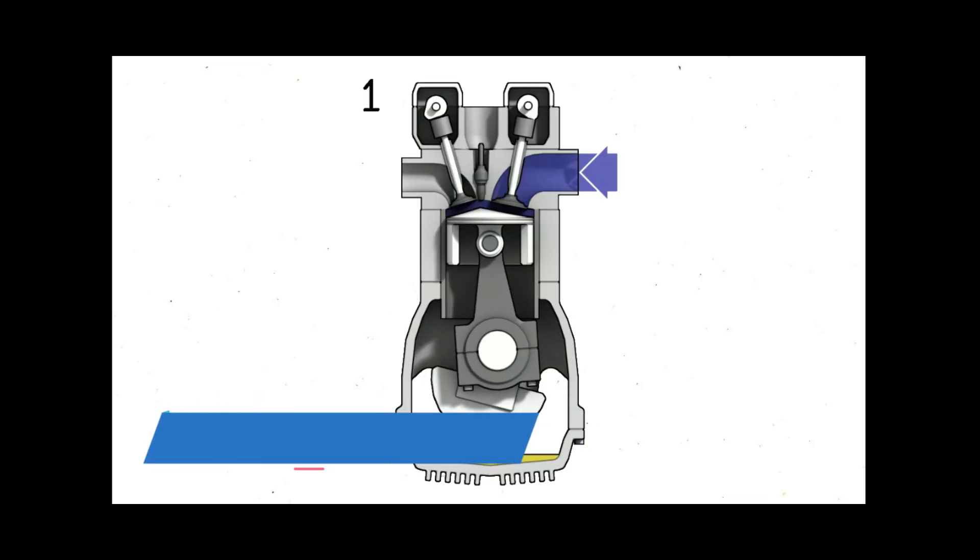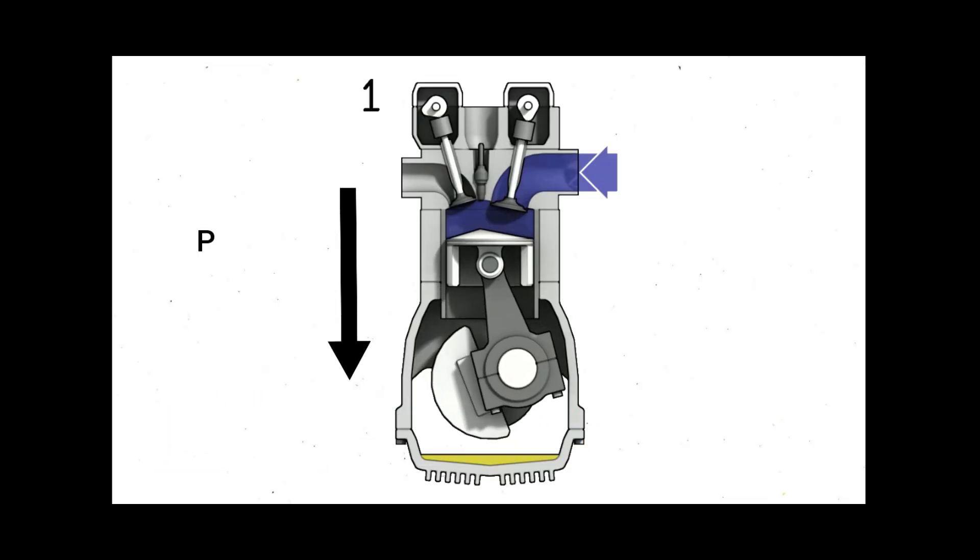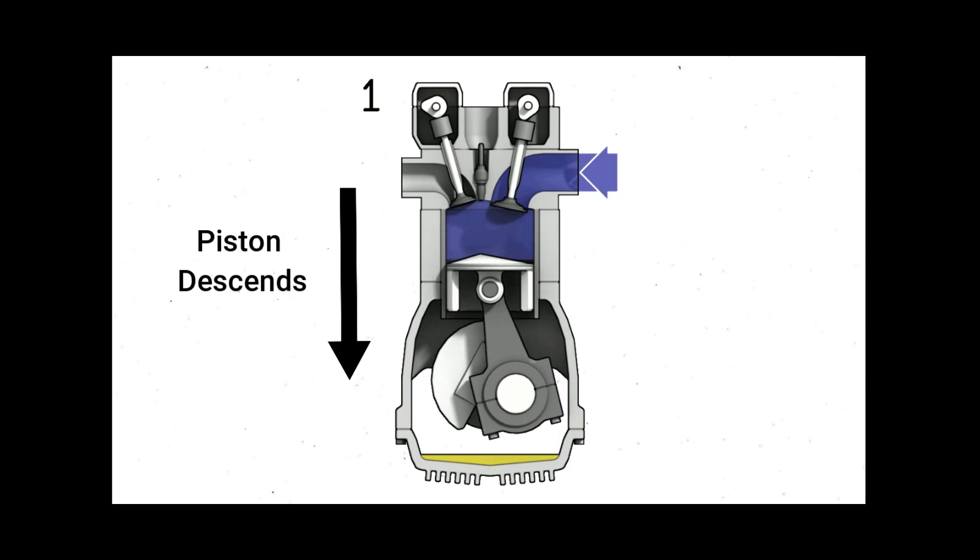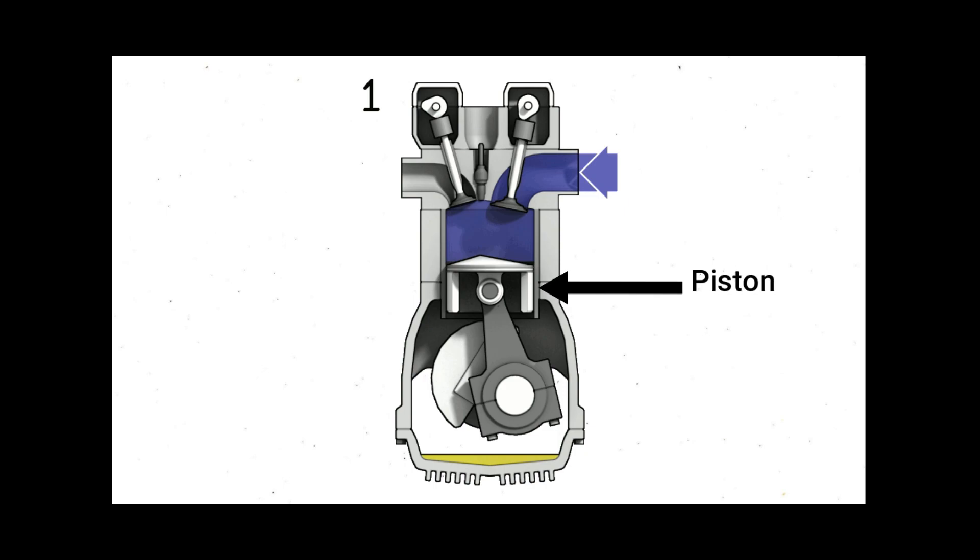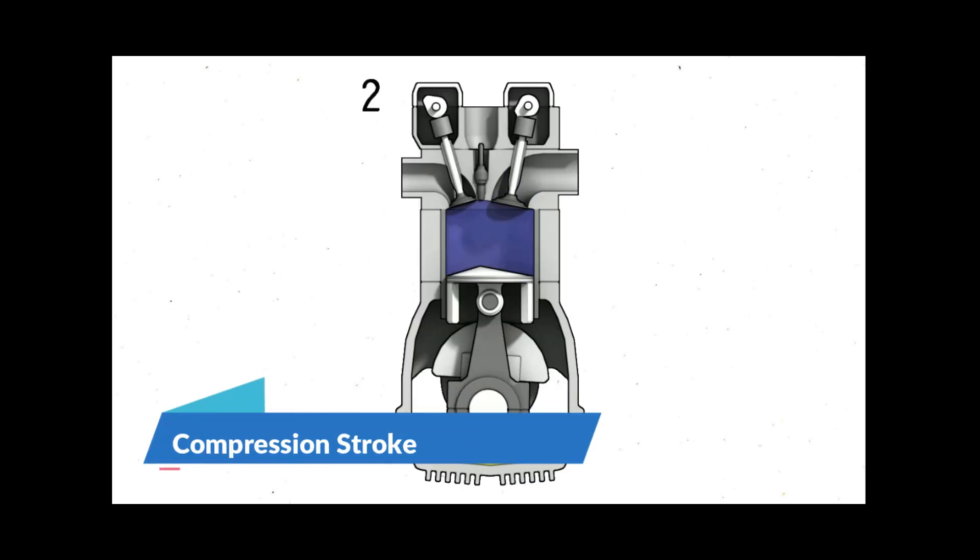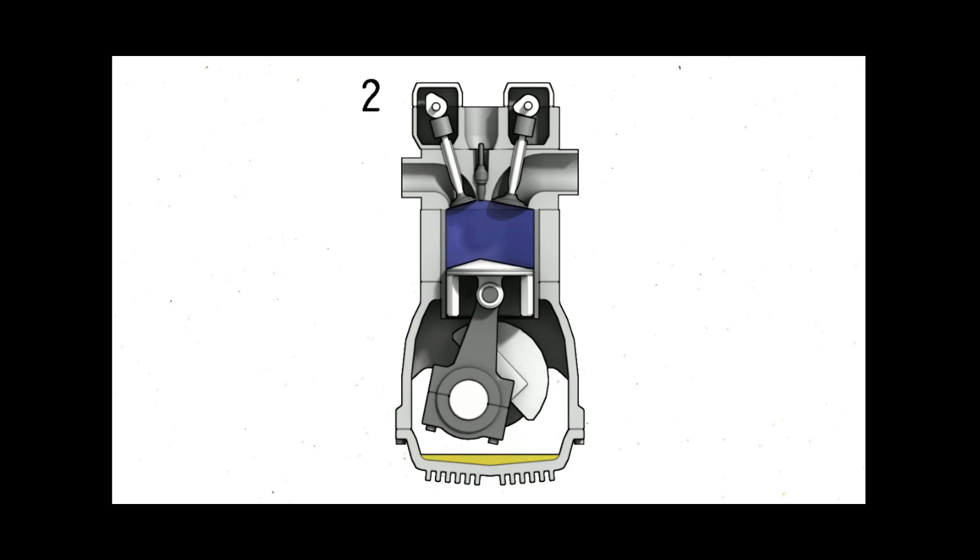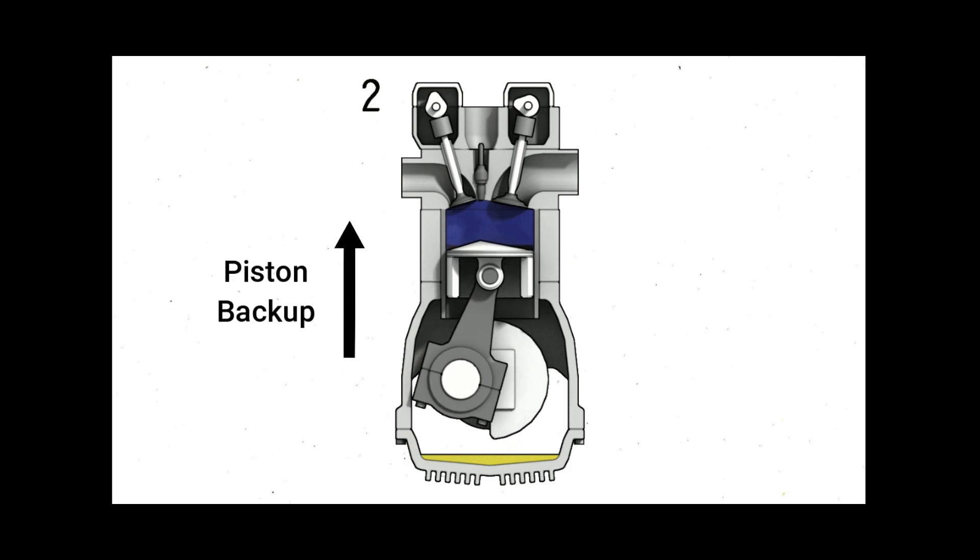In the intake stroke, the piston starts the process by descending and drawing air into the cylinder via intake valves. Then fuel is delivered into a cylinder that houses the piston. In the compression stroke, the intake valves close allowing the piston to move back up, thereby compressing the air and fuel within the cylinder.